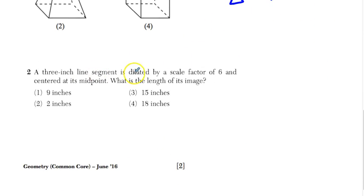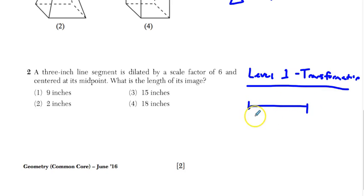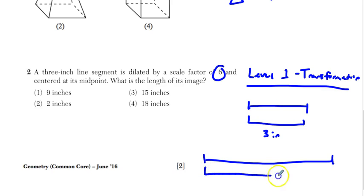For our next problem, a three-inch line segment is dilated by a scale factor of six, centered at its midpoint. What is the length of its image? Well, this is a level one question where you learned about transformations. When you dilate something, all you have to do is multiply it by its scale factor. So, we have a three-inch line segment. We're going to dilate by a scale factor of six. So, all you have to do is make this six times as long. We're going to take three times six, and that becomes, we're going to multiply this by six because that's our scale factor. And then you get an 18-inch line segment. That's it. This would be the pre-image. This would be our image. Answer number four. This thing about centered at the midpoint really doesn't make a difference. No matter what happens, the scale factor is just multiplied by the original length.